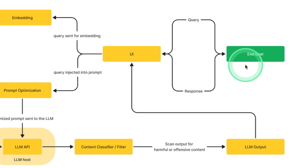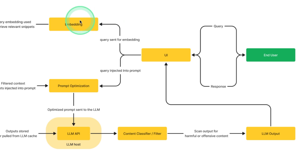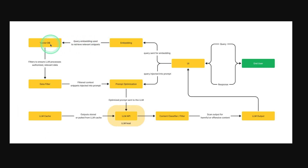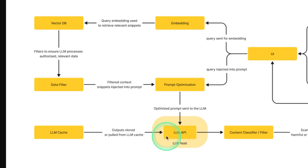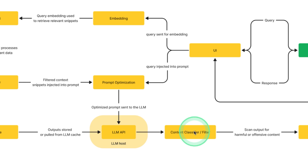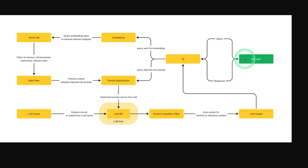When taking an AI application, when the user asks a question or query using the user interface, that will be converted to embeddings and stored in the vector database. Then data filtering happens, then it's sent for prompt optimization, then the optimized prompt is sent to the large language model, then it is filtered, and finally the user will get the output. An AI application consists of multiple areas where it could fail, so it's good to have tracing for all these steps.